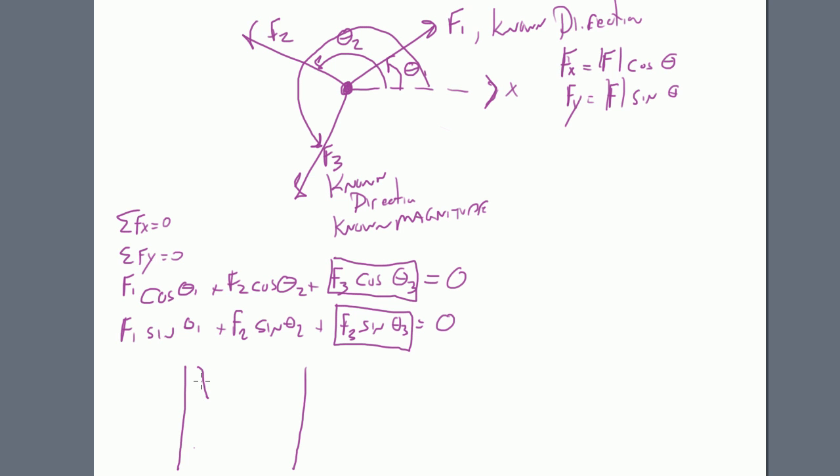And that matrix will have in here the description of the unit vector of force one. So this is going to be lambda of force one. This is going to be lambda of force two times your unknowns, which is magnitude of force one and force two equals the opposite, if you would, by taking this to the side of the known. So in this case, this is going to be the opposite of the knowns. And that'll look like that with two values here and there.